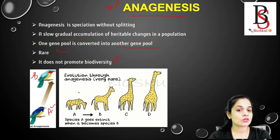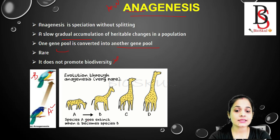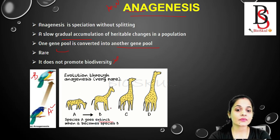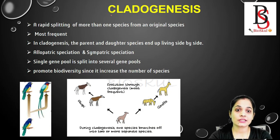For example, the evolution of zebra takes place through anagenesis, and it is really very rare. When species A is converted into species B, species A goes extinct. So anagenesis does not promote biodiversity, and the evolutionary changes take place within a single lineage.